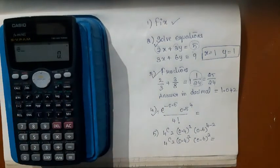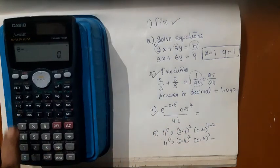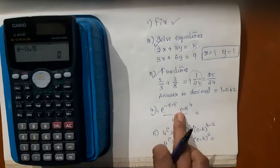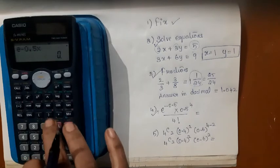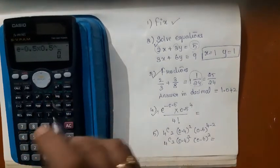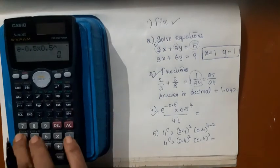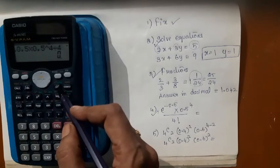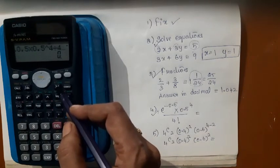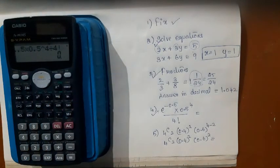Minus, you can use this minus also. Minus 0.5 into 0.5 power. This hat symbol is used for power. 4 divided by 4 factorial. Factorial is here outside this key, so you should use shift x inverse. That displays factorial. That's all.